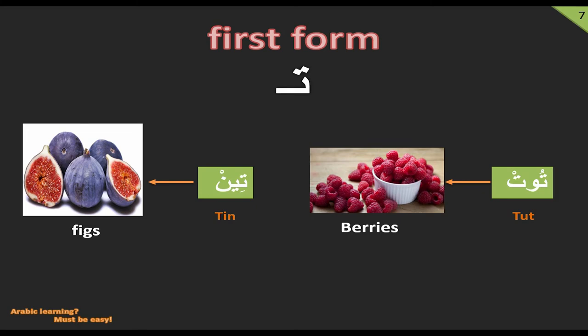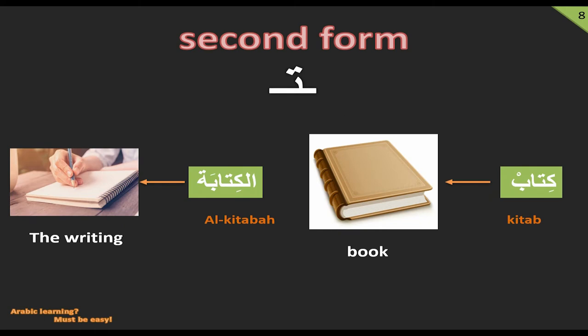On the next slide, we have two examples of the second form of the letter Ta: namely 'Kitab', which means book, and 'Al-Kitaba', which means 'the writing'. Both words have the same writing and the same role, as you can clearly see.